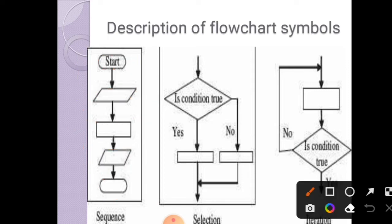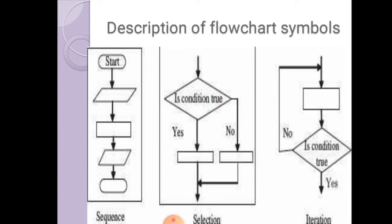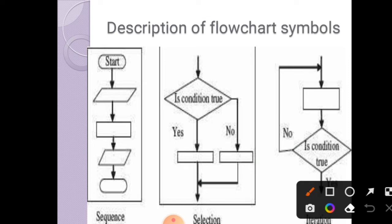The next structure is selection. Selection means condition — when we want to select only one option from a set of alternatives, we use the selection structure. The flowchart starts, then checks a condition using the diamond-shaped symbol. If the condition is true, certain statements are executed; if false, other statements are executed. This is the selection structure.